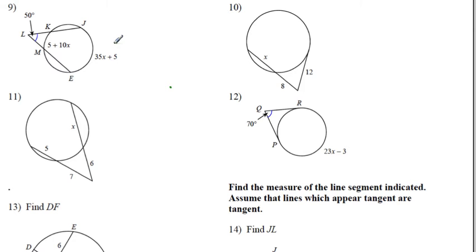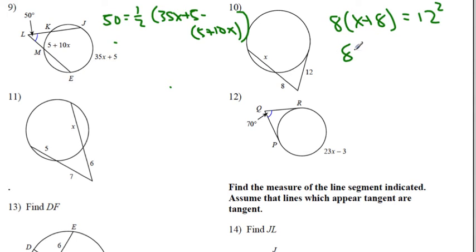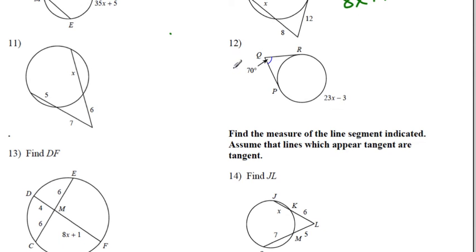Same setup as the previous: 50 = ½[(35x + 5) − (5 + 10x)]. Work out the algebra and you're good. For problem 10, dealing with segments: the external part times the entire secant equals the tangent squared. Working it out: 8x + 64 = 144. For number 12, 70° equals half the difference between the major arc and the minor arc. We need to figure out what that arc is: 360° minus the given arc expression.